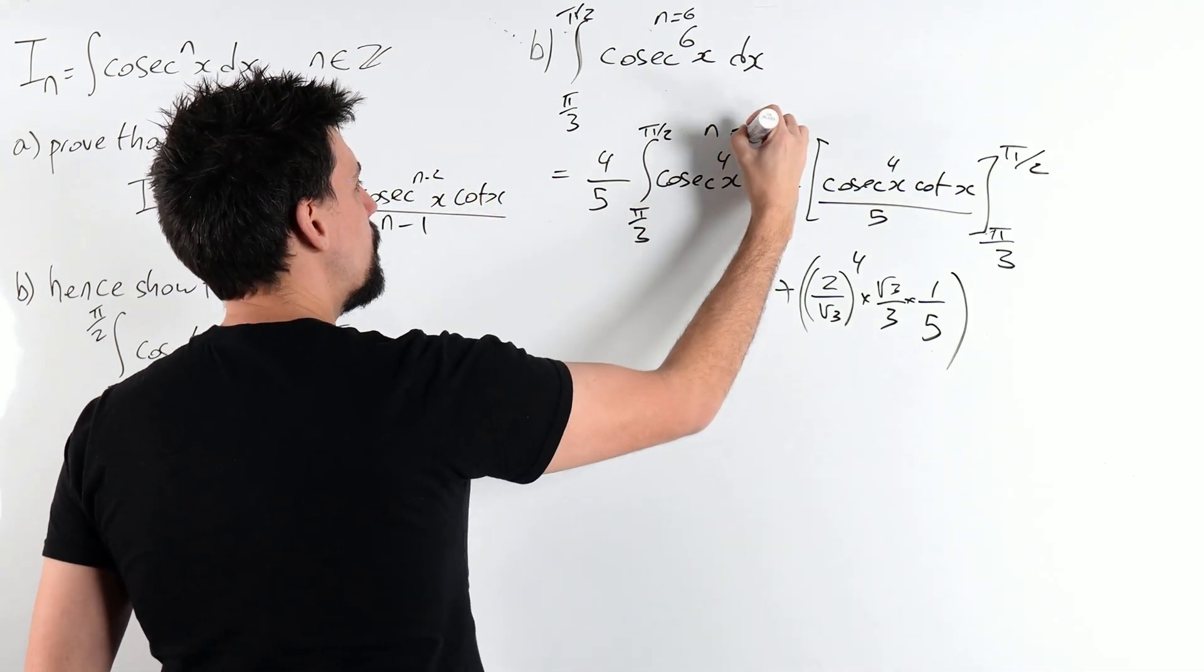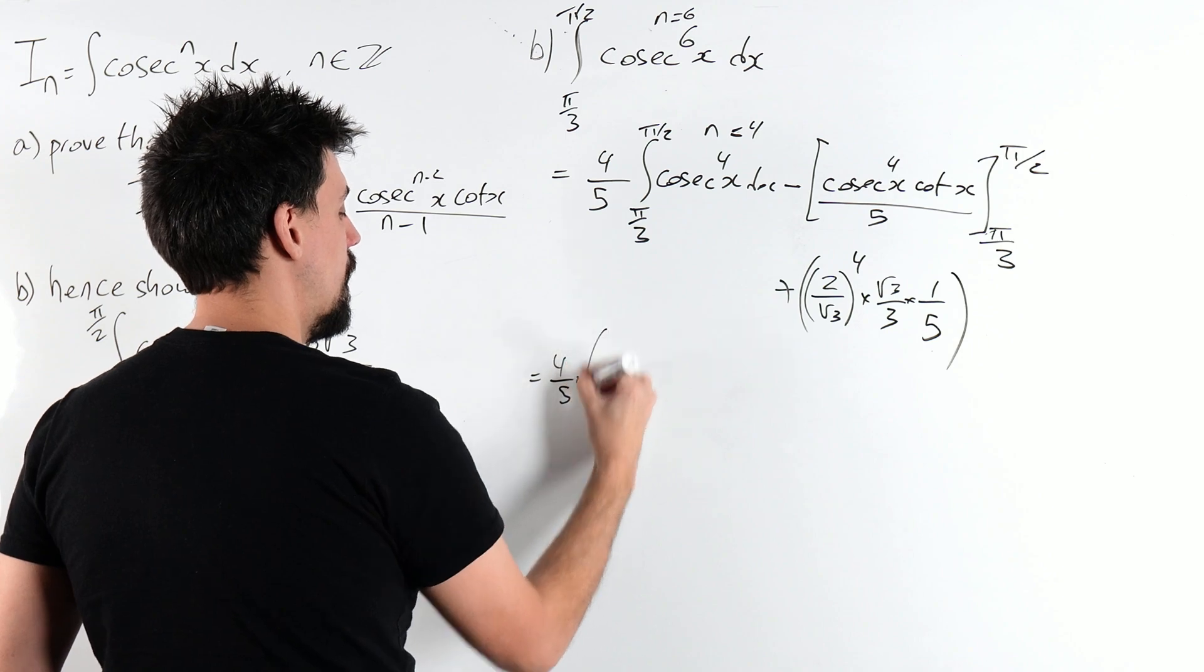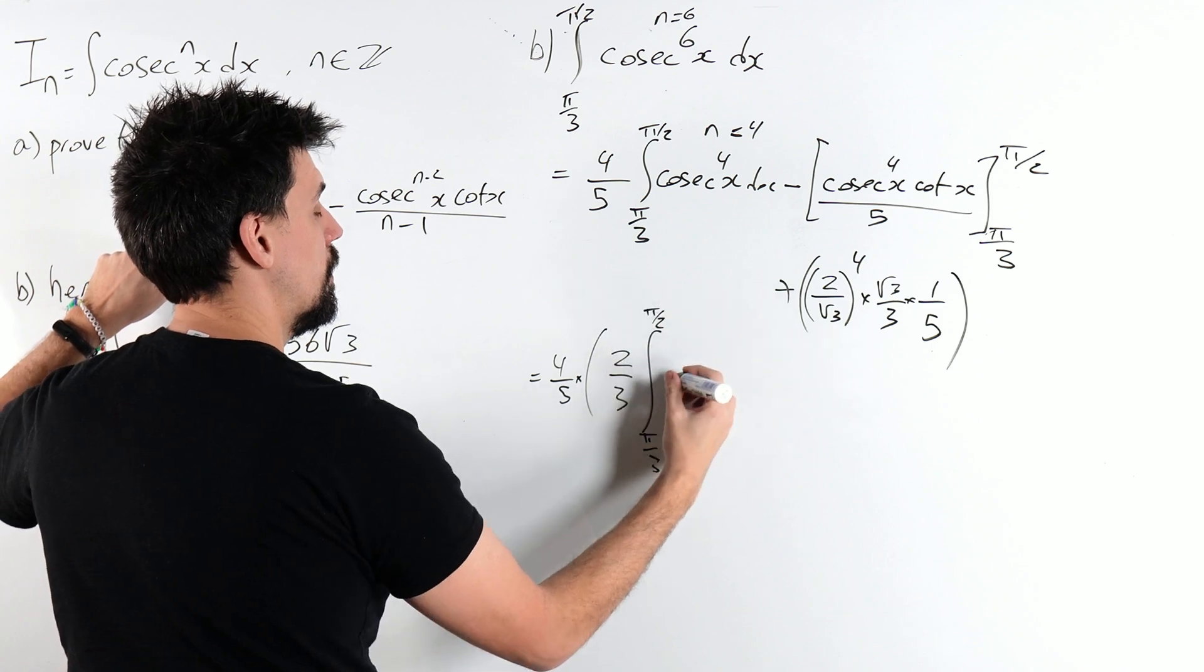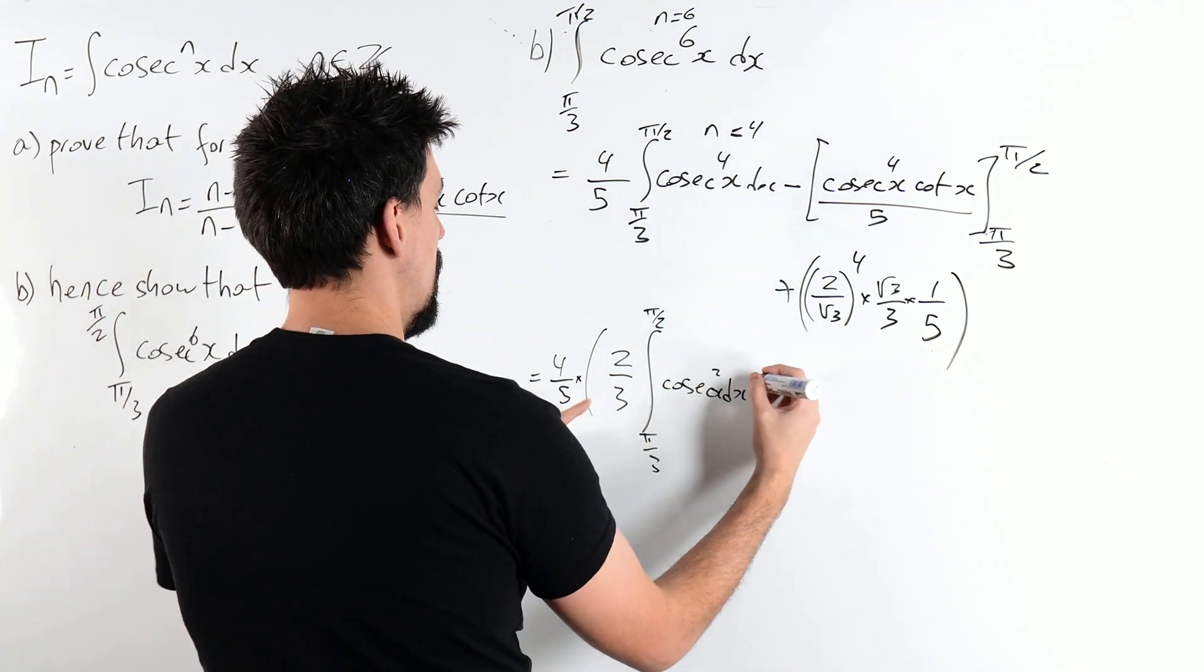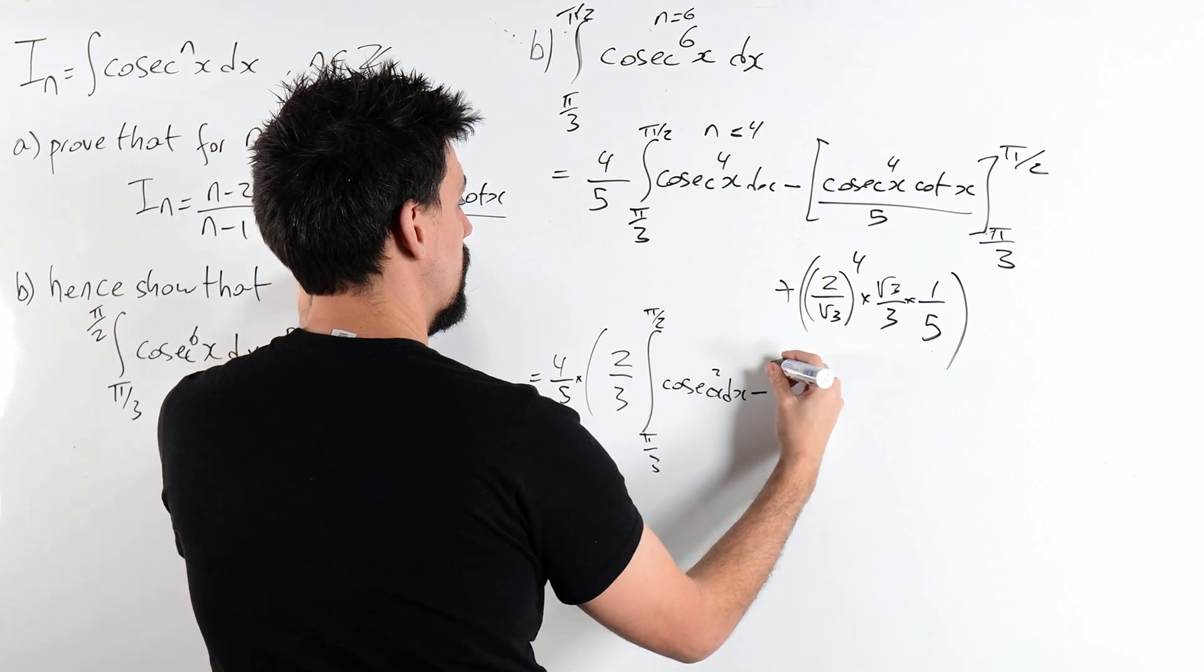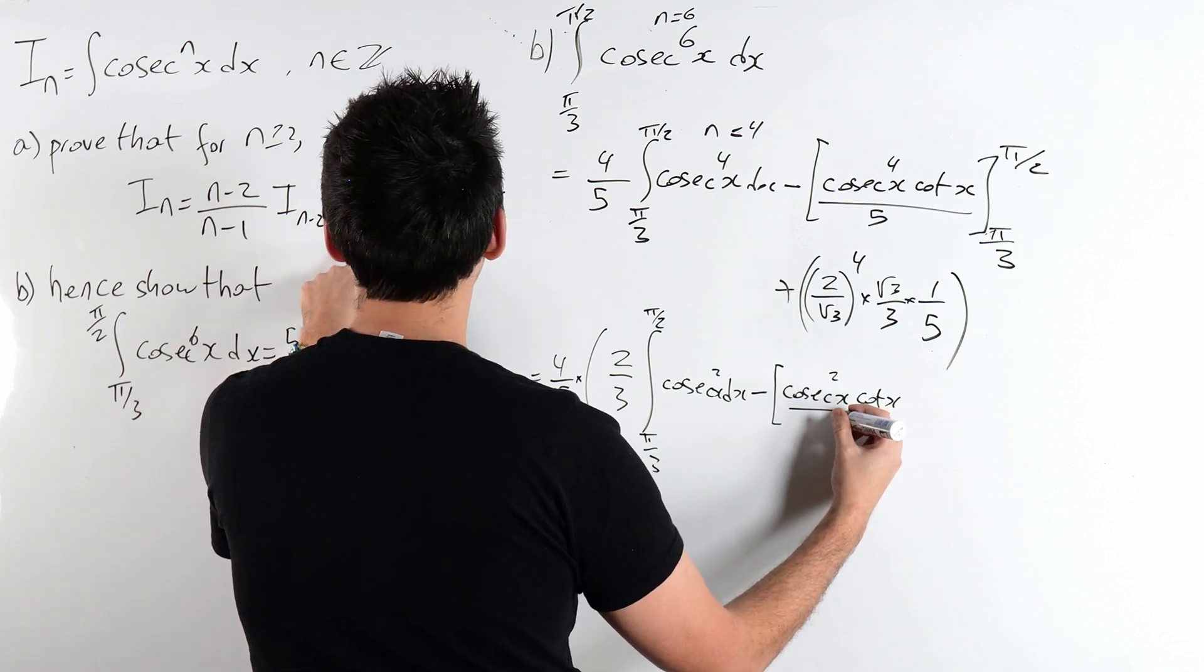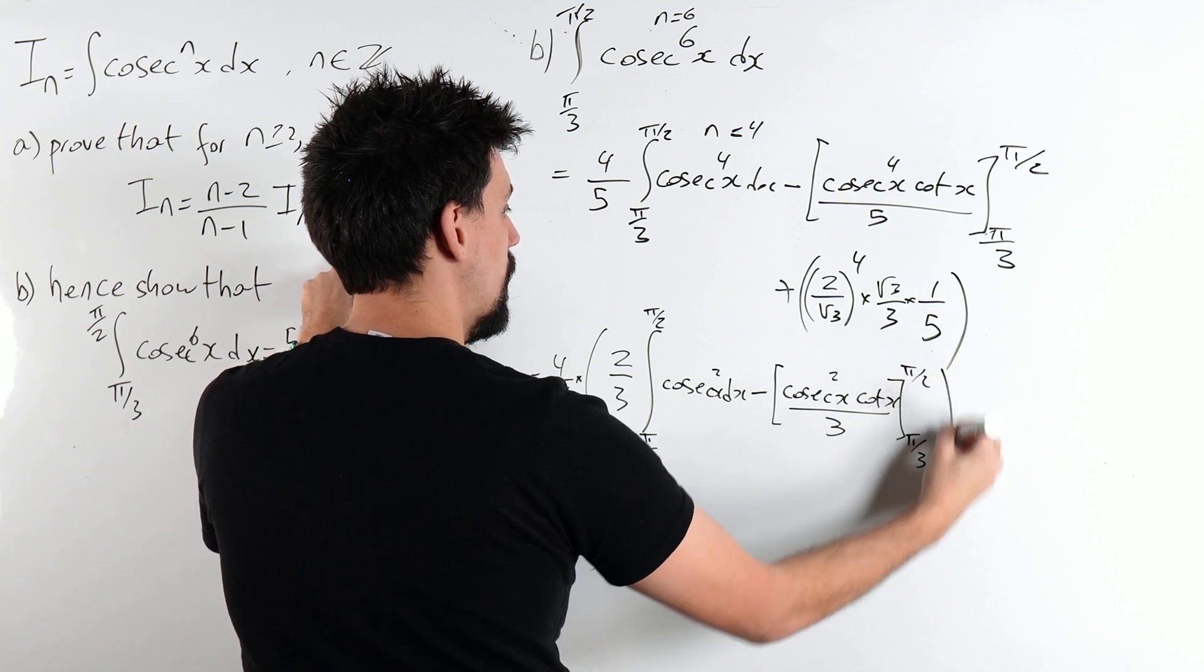All right, so now we're back here with n is 4. So now we need to go again. So that is 4 fifths times 2 over 3. Cosec squared x dx minus cosec squared x cot x over 3 this time. All right, fine. I'll deal with this one.